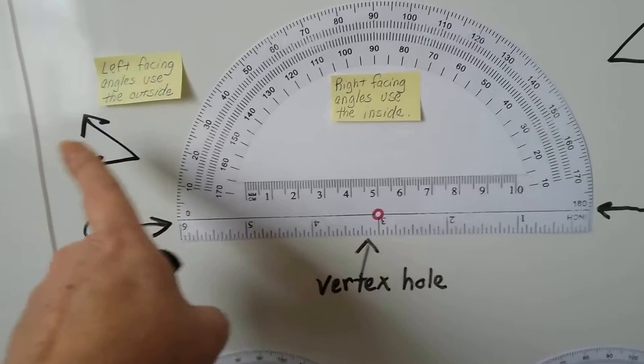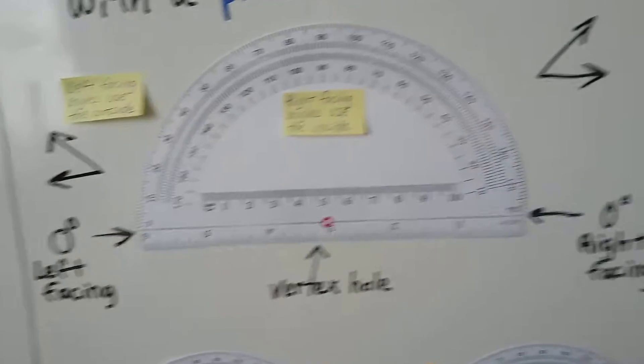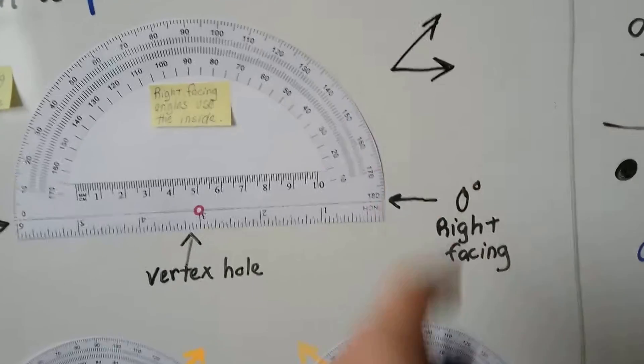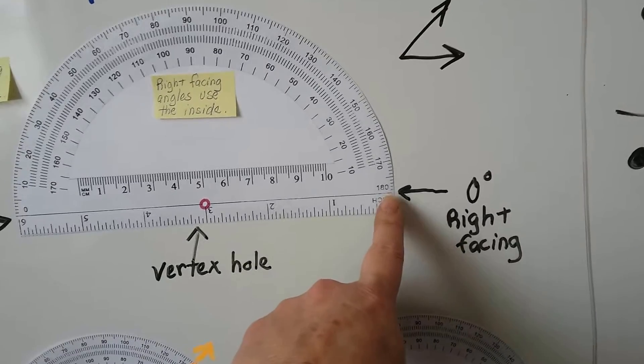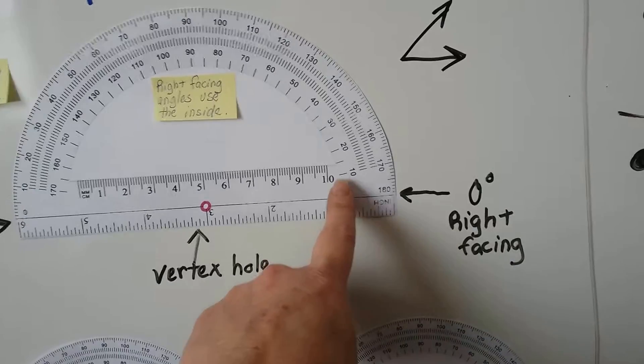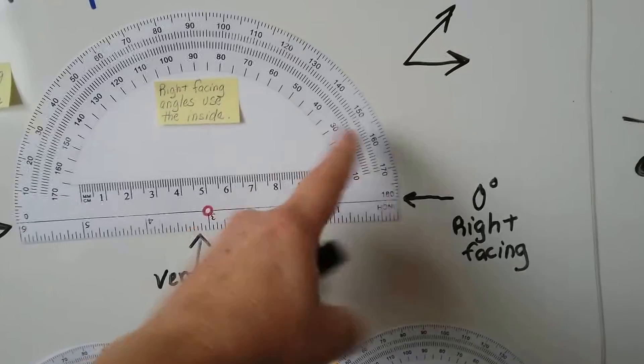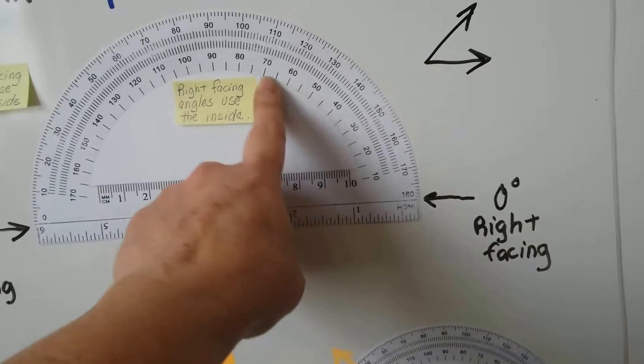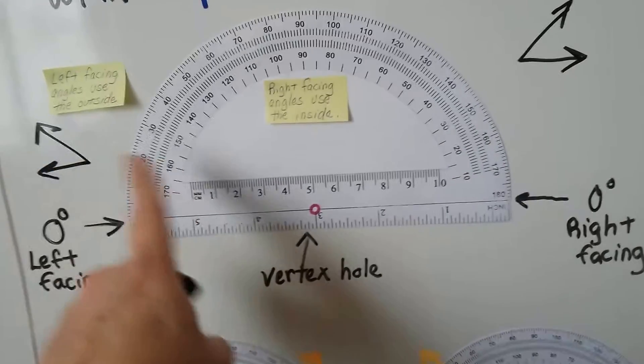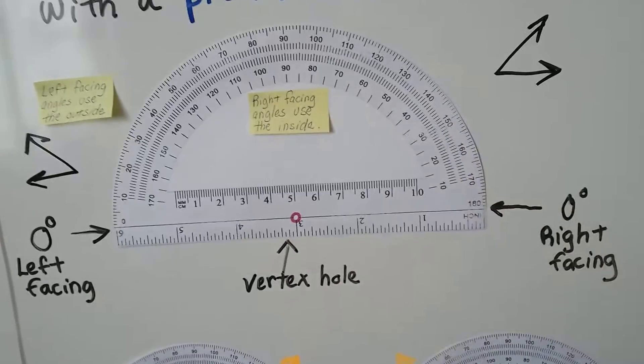So that would be for an angle opening like this one to the left. For an angle opening to the right like this one, this line is 0 degrees. And then that's 10, 15, 20, 25, 30. See? So it's facing that way. We use the inside measures. When it's facing to the left, we use the outside measures.